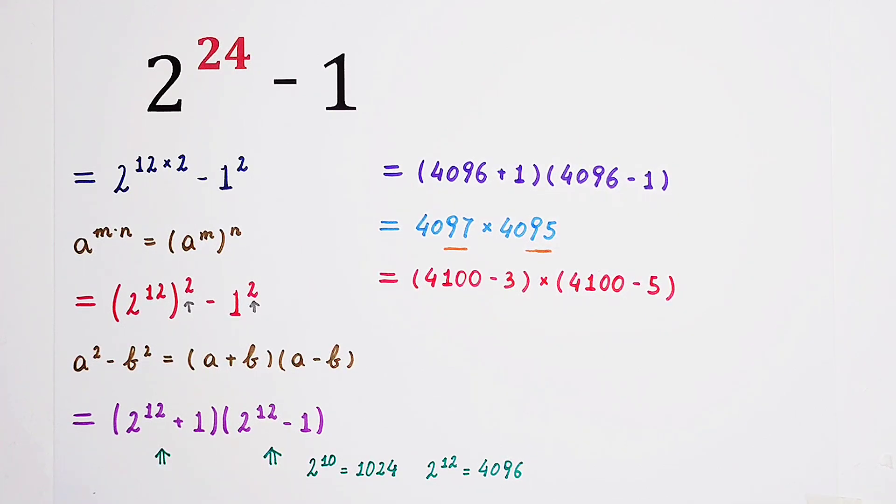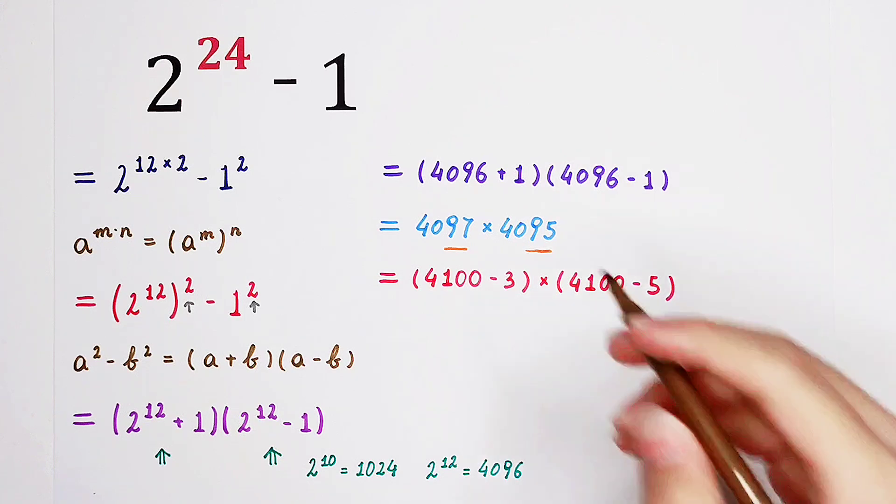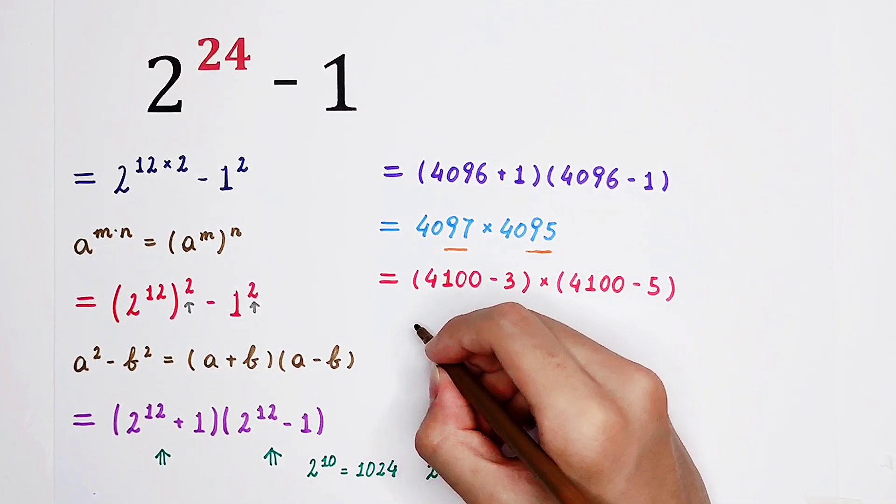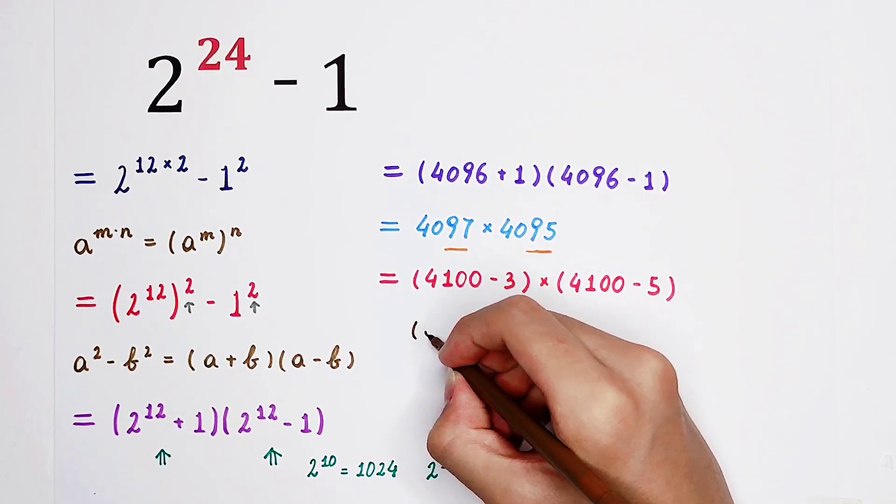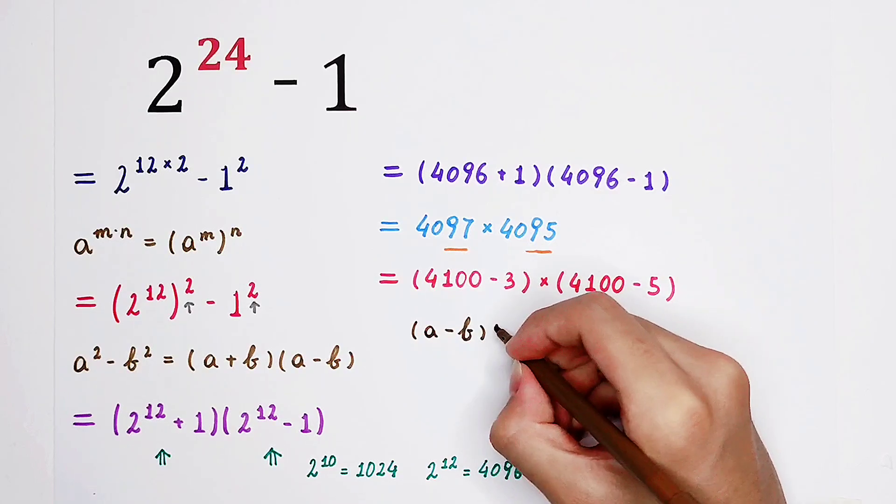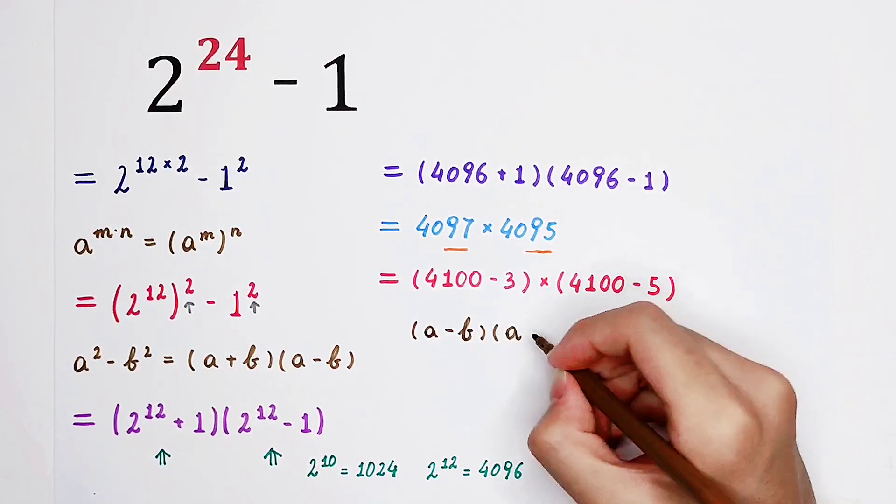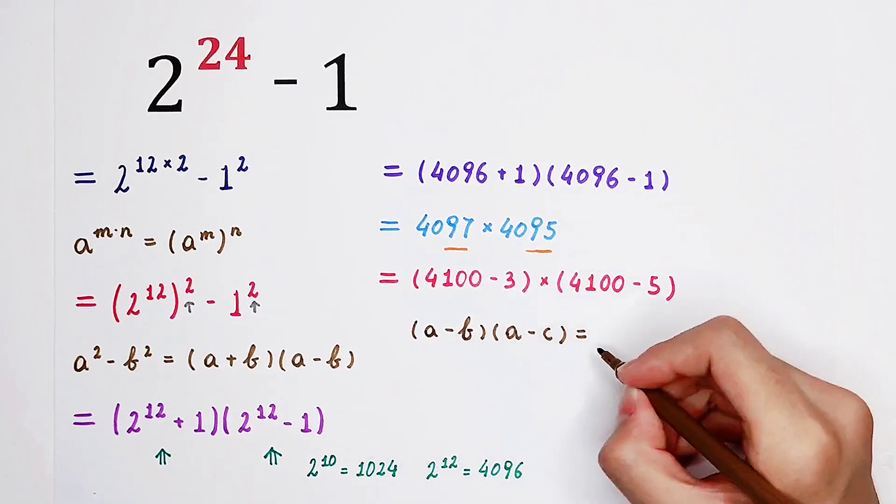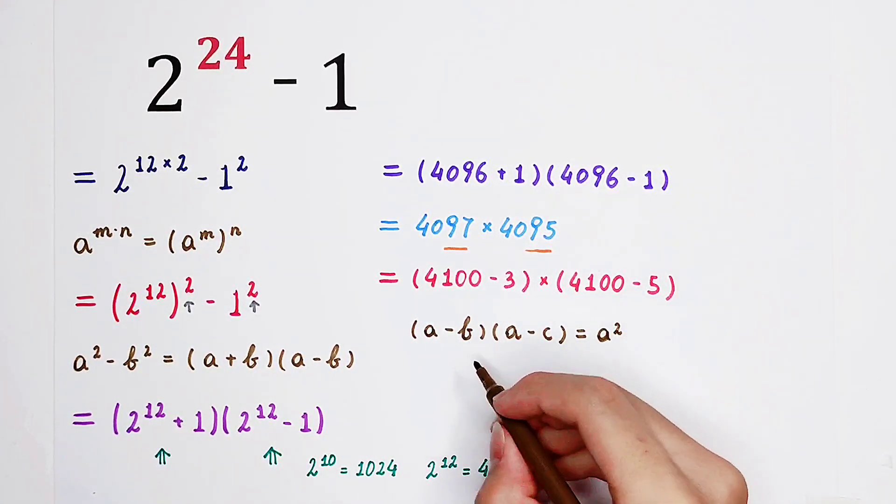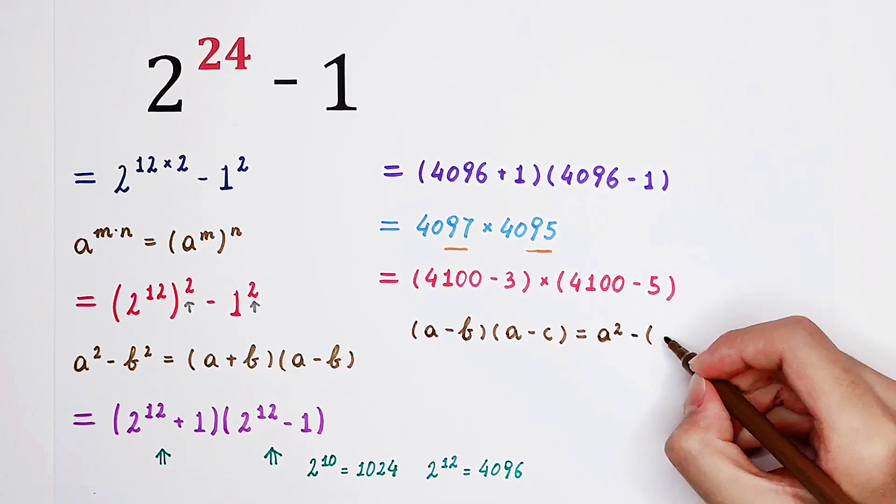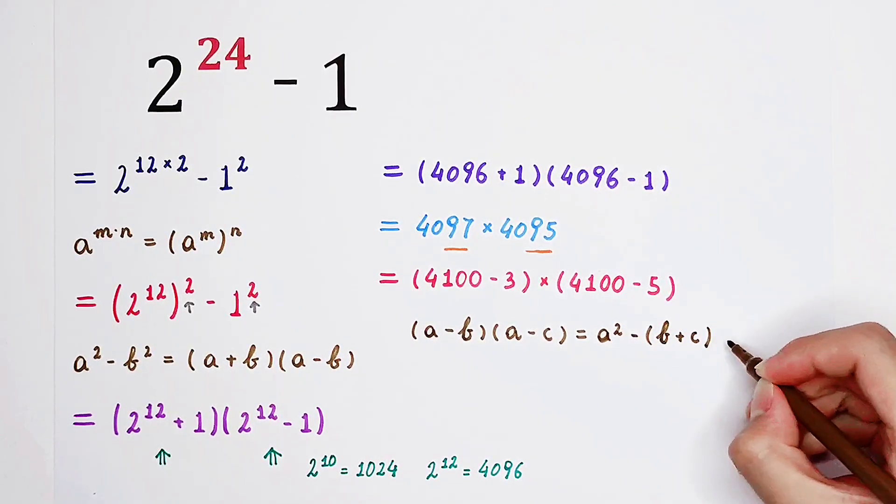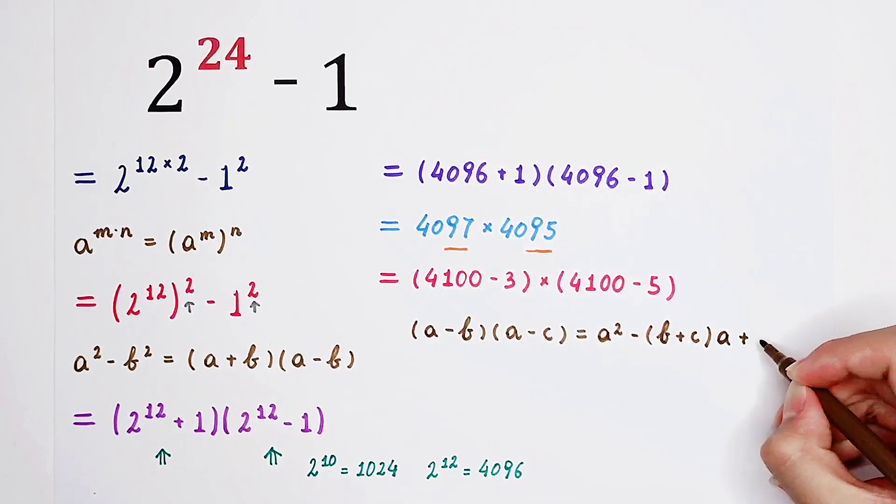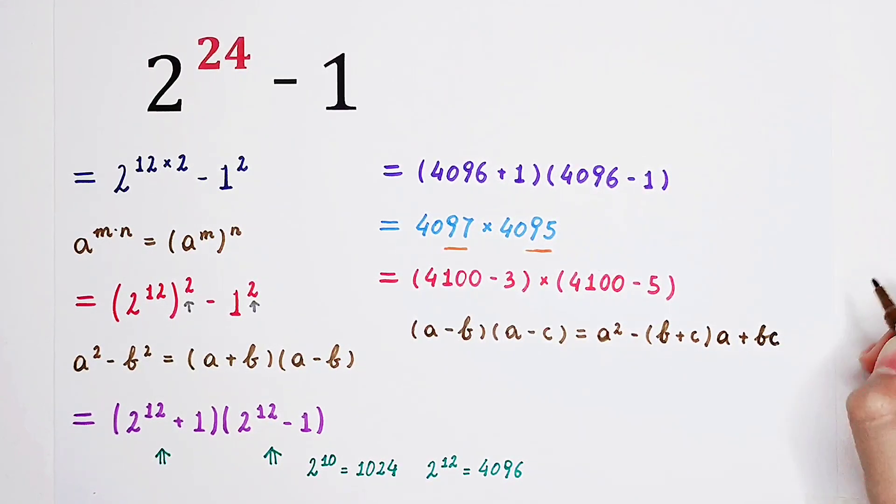So then we can use another formula. Which formula? This one. I'm going to write here. This formula: a minus b times a minus c. Of course, it is equal to a times a, a squared, minus ab minus ac. It is minus b plus c times a. And then minus b times negative c. It is positive bc. So the result is only this.